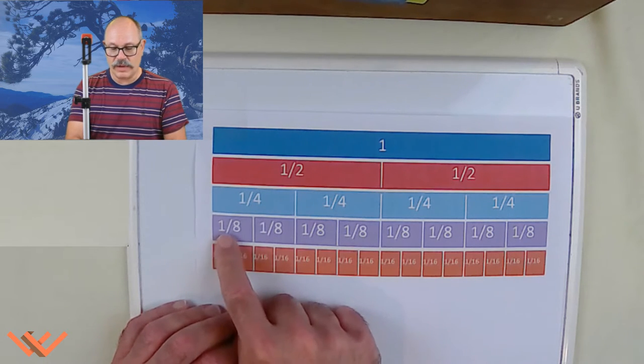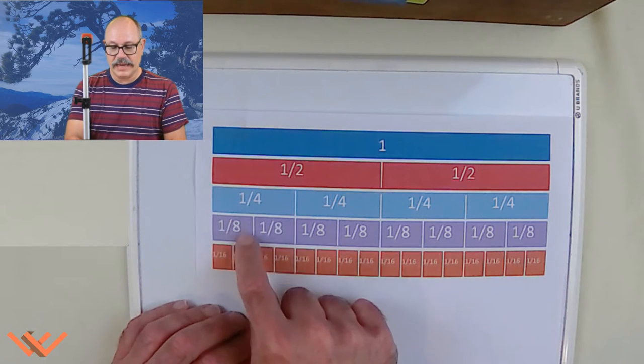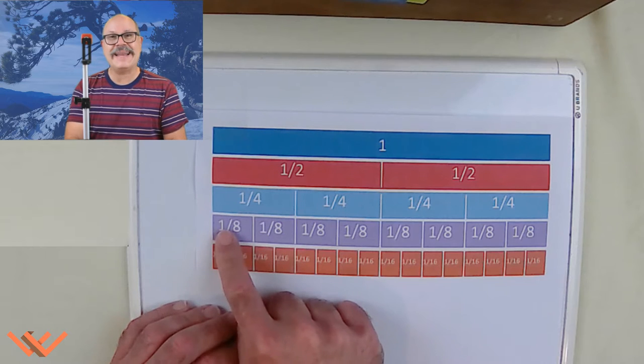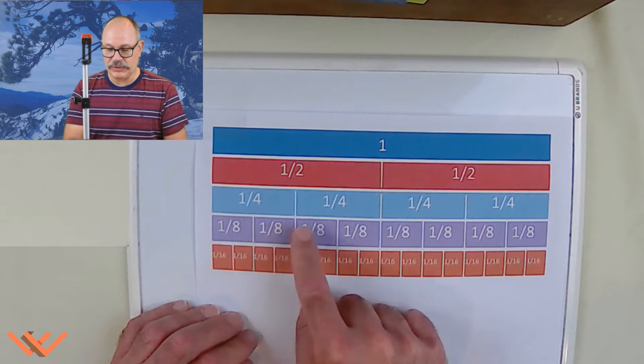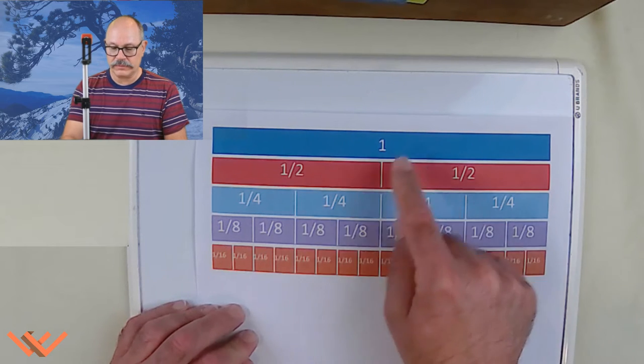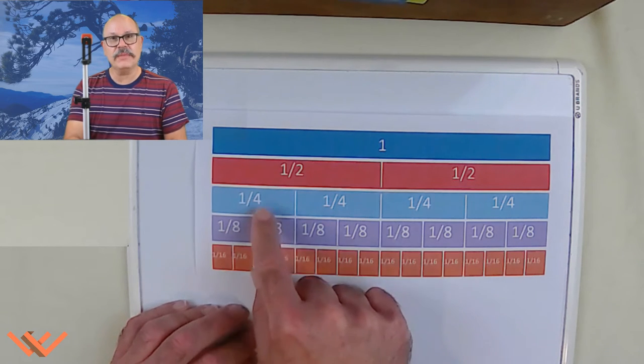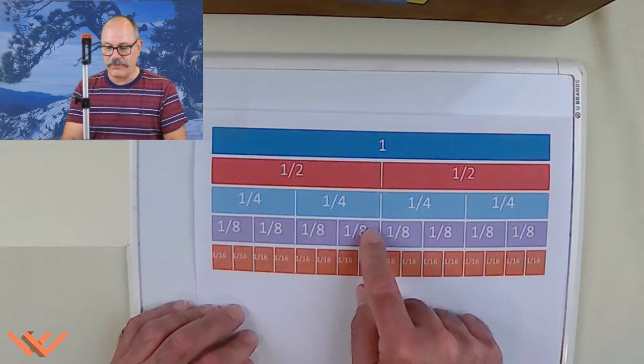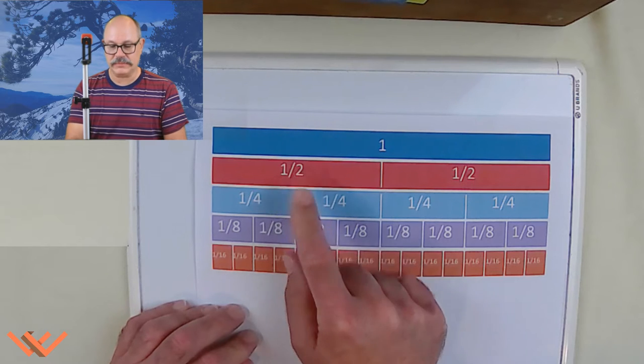Next line down, I have one slash eight. That bar there, eight. And that's one eighth. And I have one, two, three, four, five, six, seven, eight eighths make one whole. Two eighths make one quarter. Four eighths make one half.